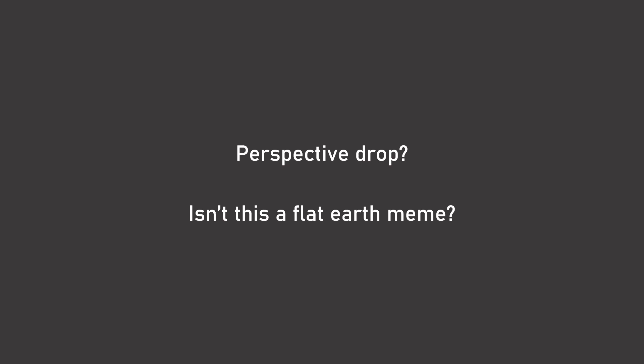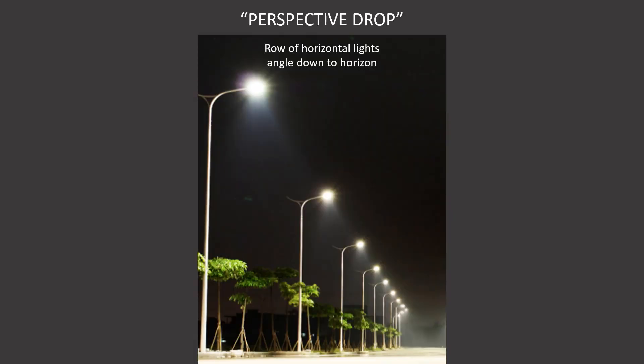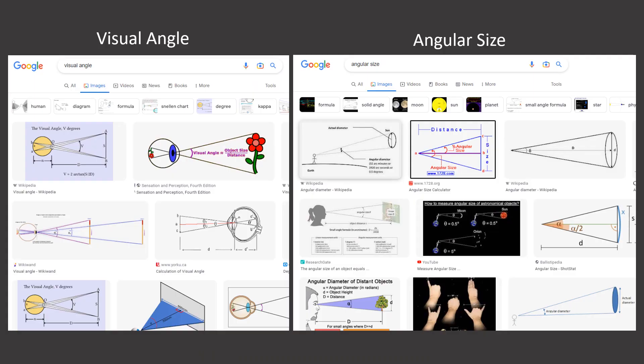Perspective drop? Hmm, sounds like a flat earth meme to me. Yes, we all agree that a row of horizontal lights angle down to the horizon. So when we're talking about perspective, we're talking about the visual angle or how big the object appears to be, which is also the same as angular size.